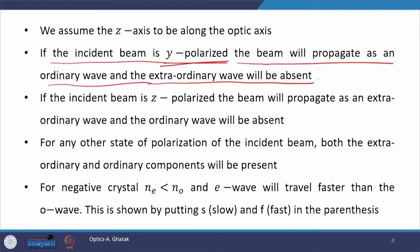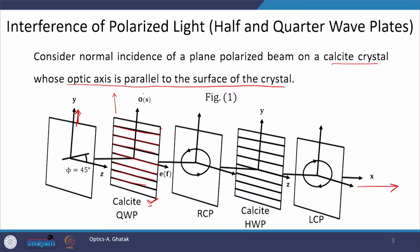For any other state of polarization of the incident beam, both extraordinary and ordinary components will be present. We first talked about two extreme cases where only one type of wave is present — either ordinary or extraordinary. But if the state of polarization is such that the orientation of the vibration is neither along z nor along y, but at an angle with respect to z, then both ordinary and extraordinary components will be present.